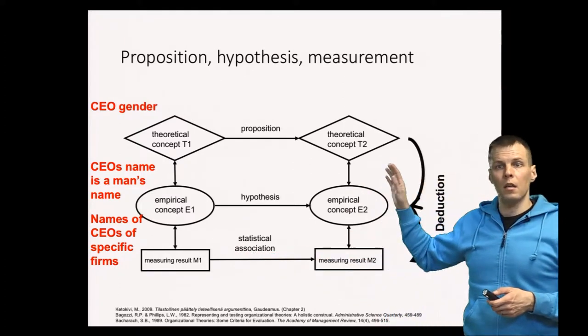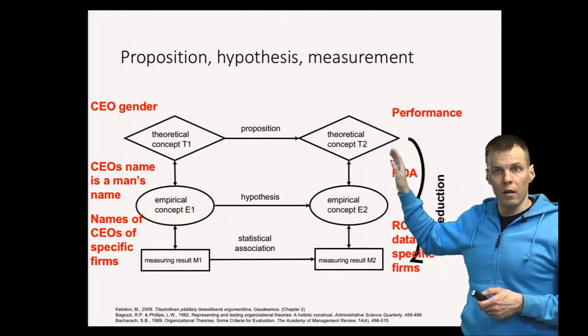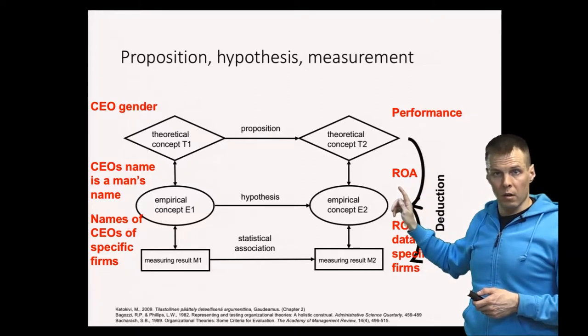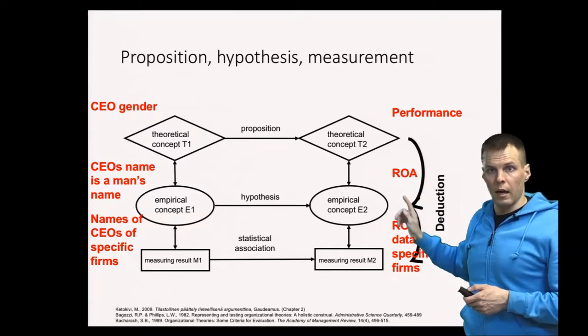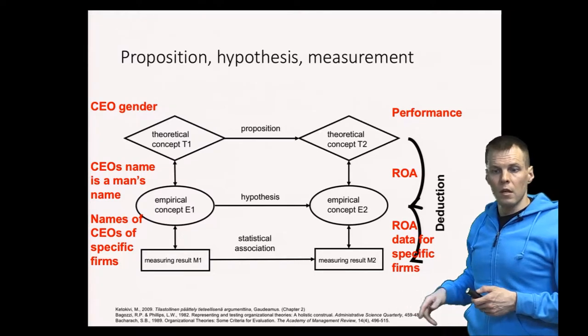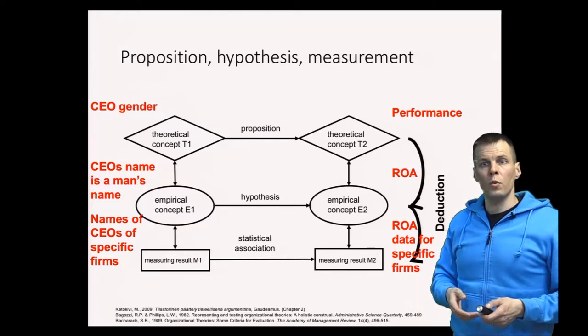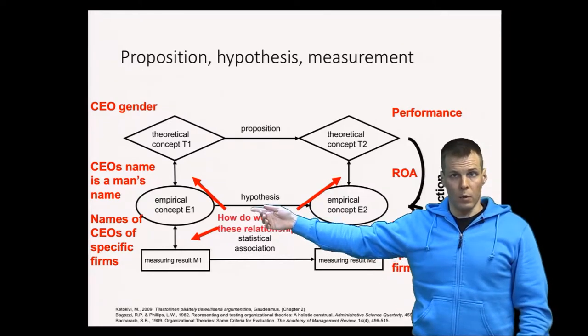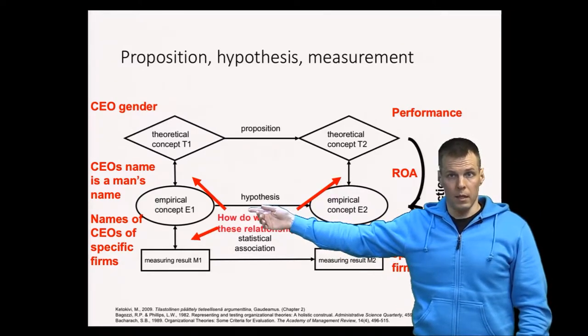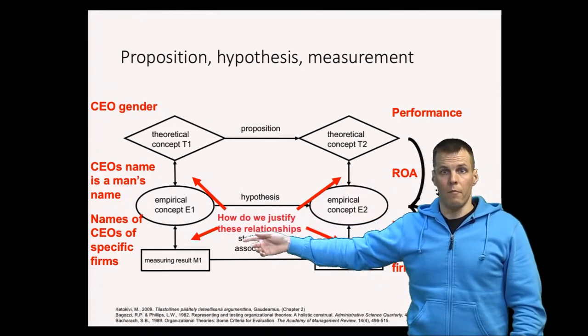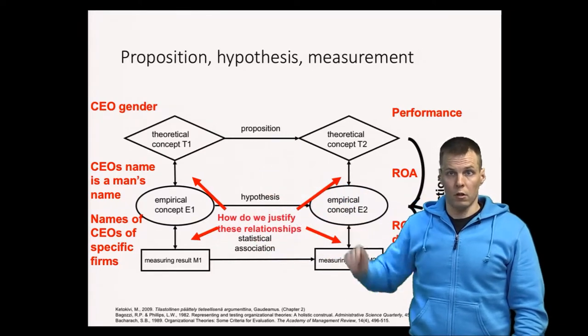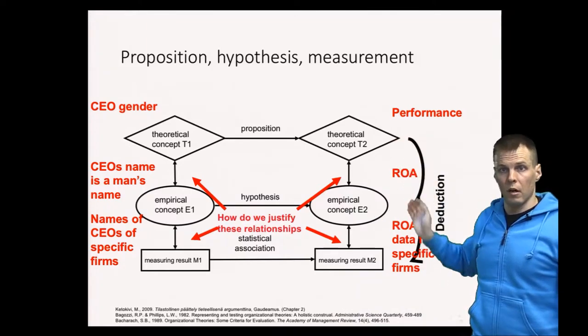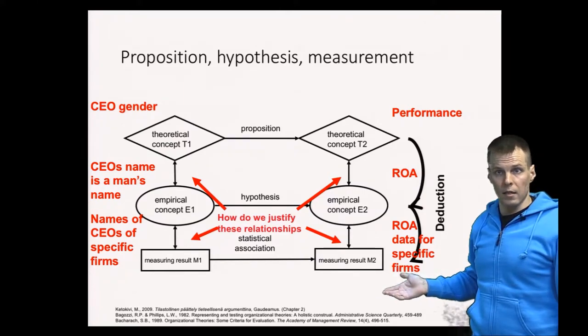The same thing here: we need to have a concept for the dependent variable, performance. ROA is the empirical concept here in the example, and then we have ROA data for specific firms. Now the question is, how do we justify these relationships? How do we justify that whether the CEO's name is a man's name is a reliable and valid measure of the theoretical concept? How do we justify that ROA is a valid performance measure and that our data is reliable?